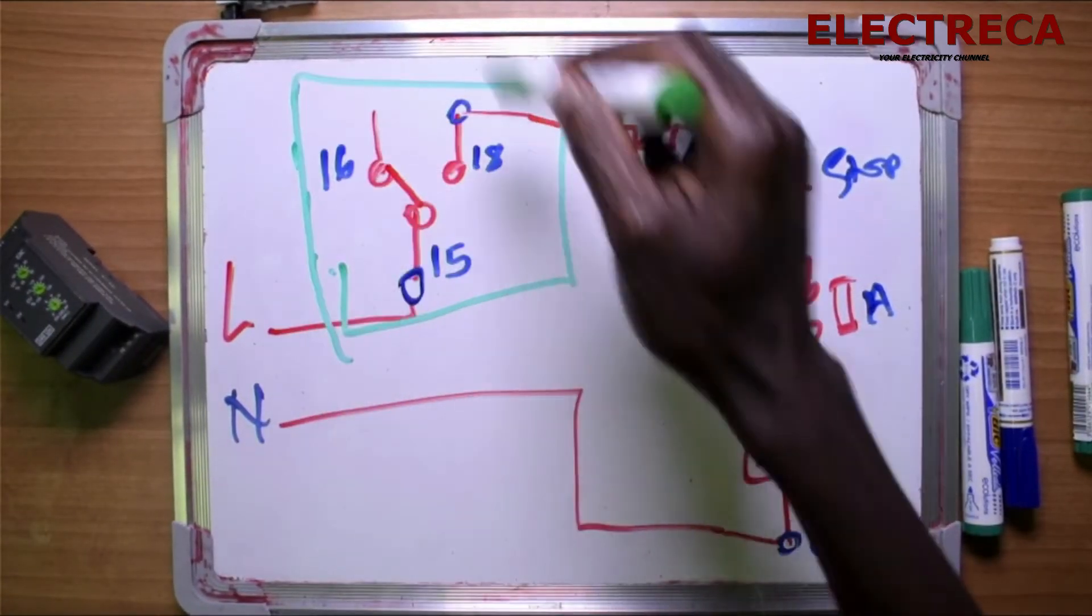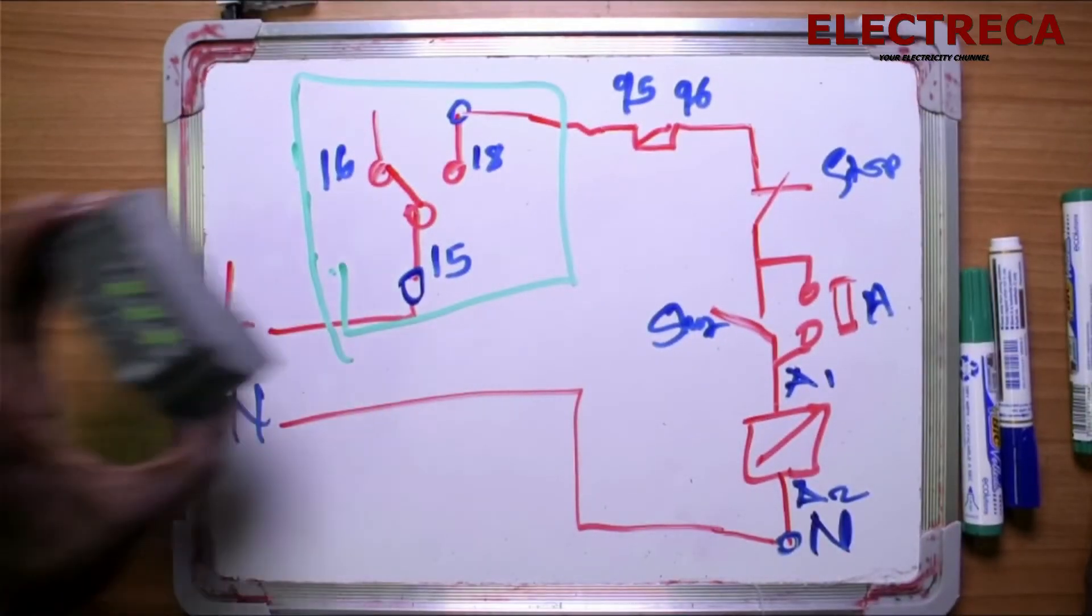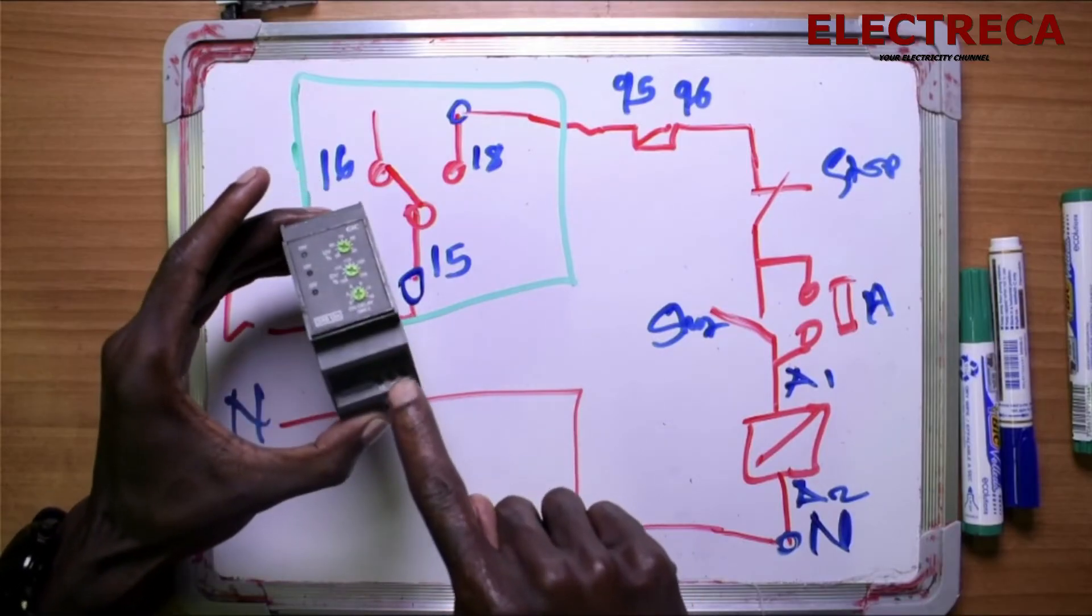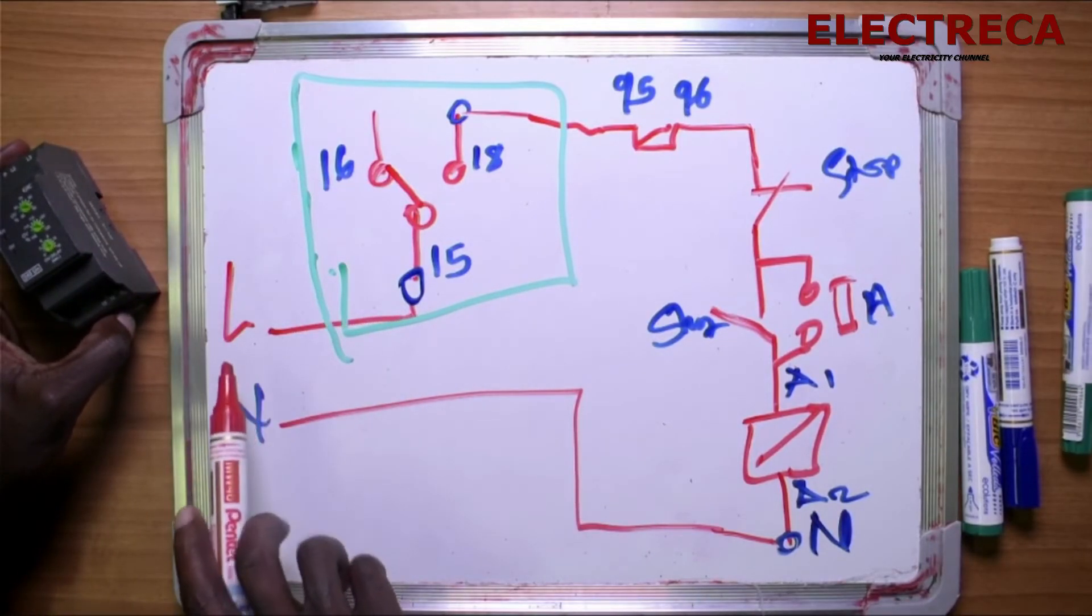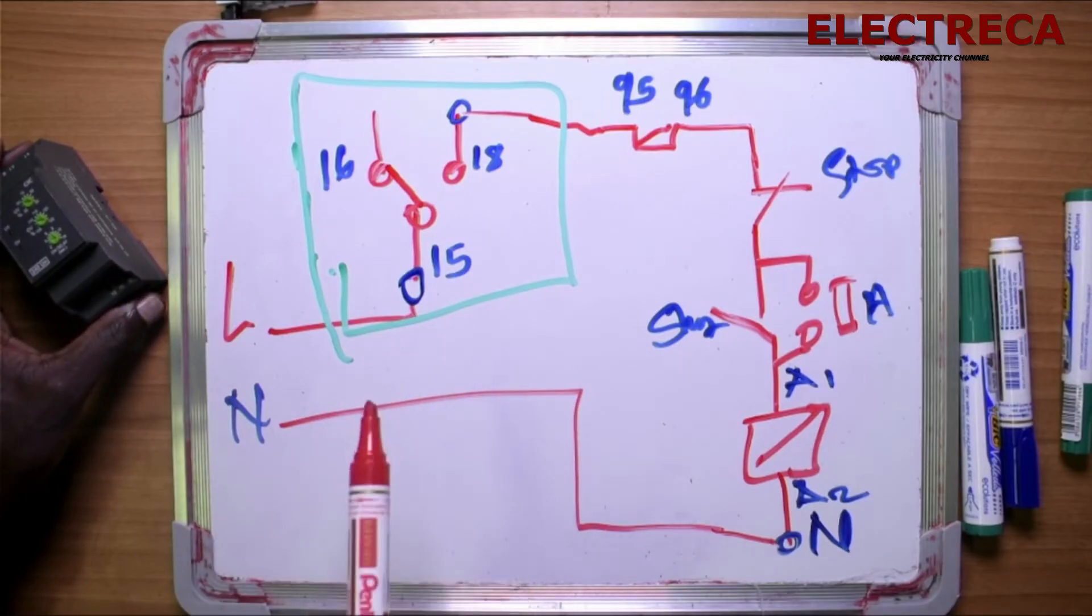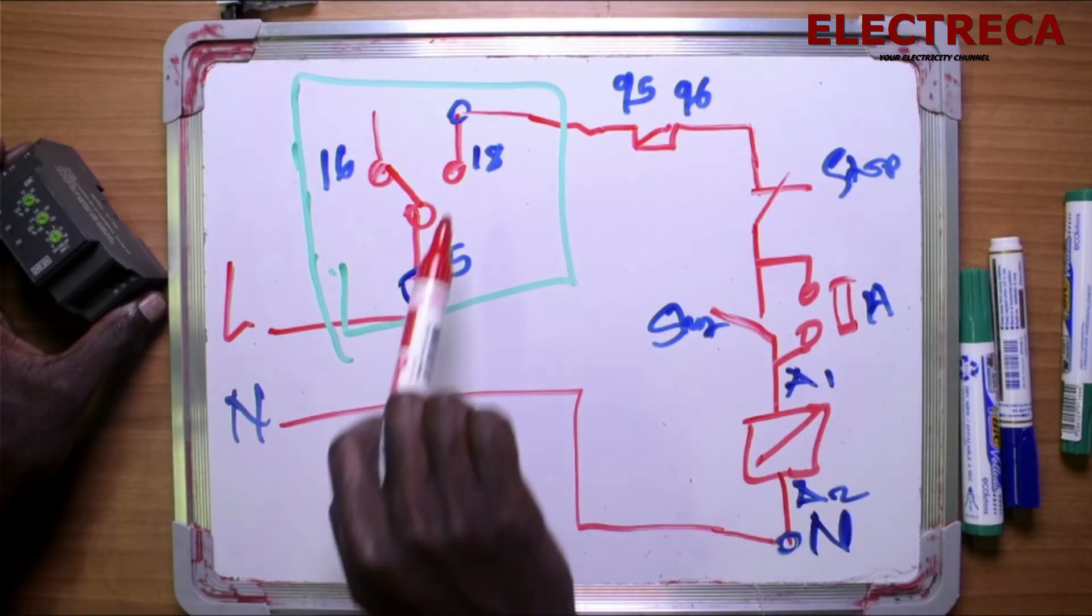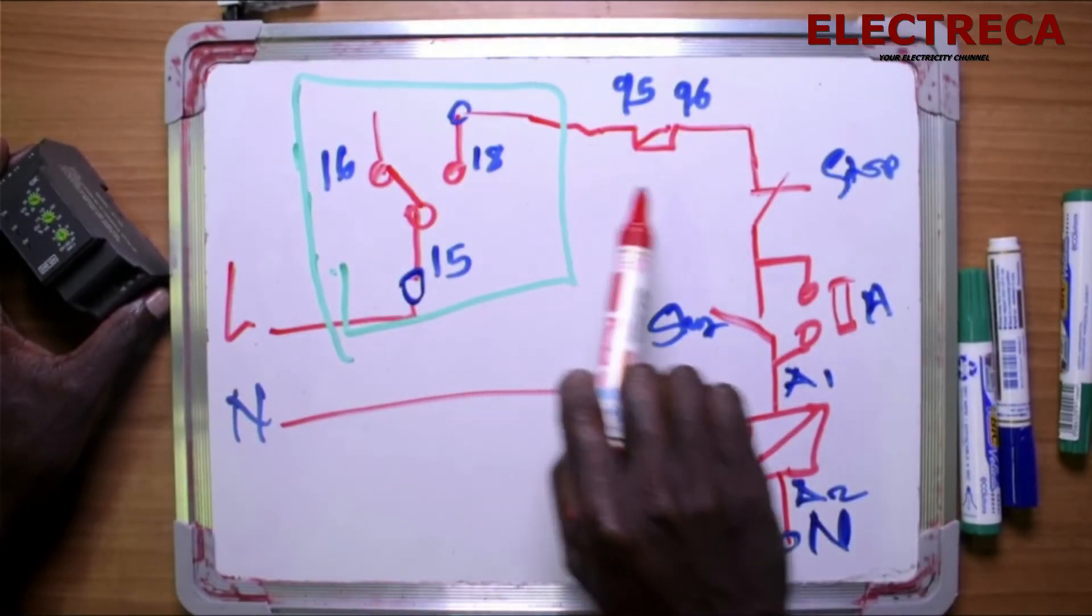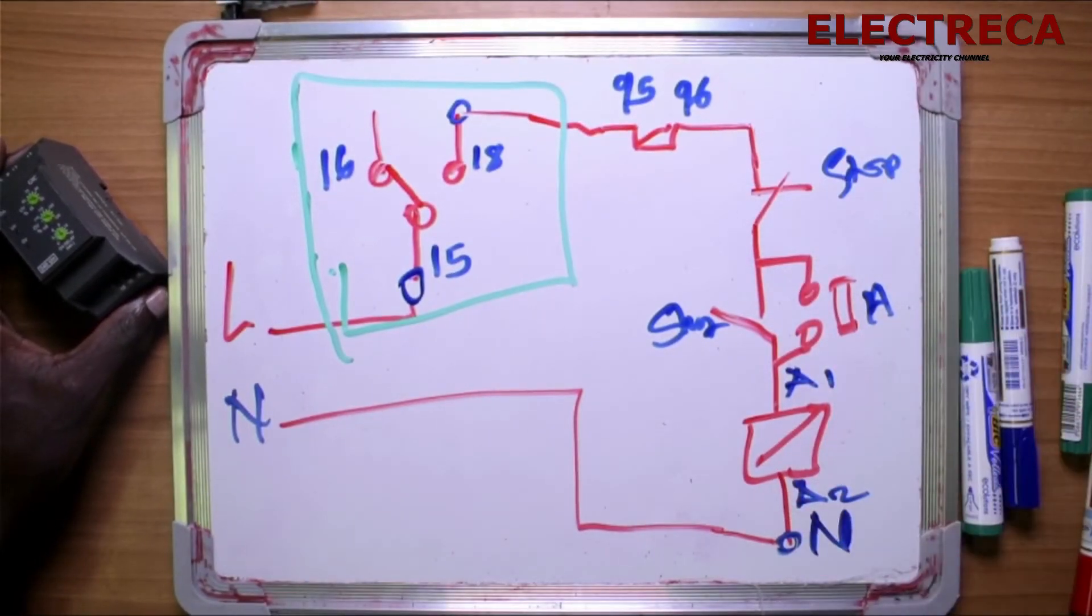This one here is your phase monitor, the contacts that we have shown here, the three contacts. So your live wire will go through number 15. Number 15 will be common, and now out on number 18, then through the overload to your control circuit. So how easy is that?